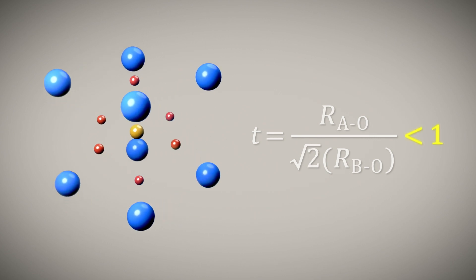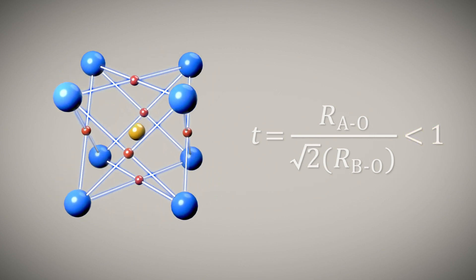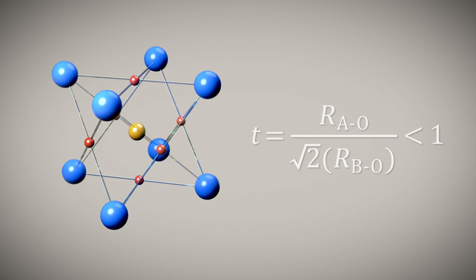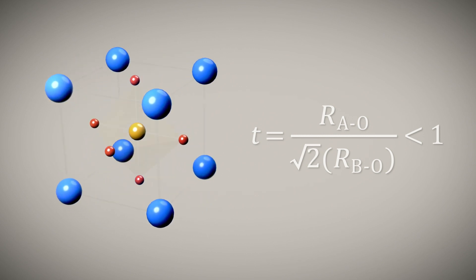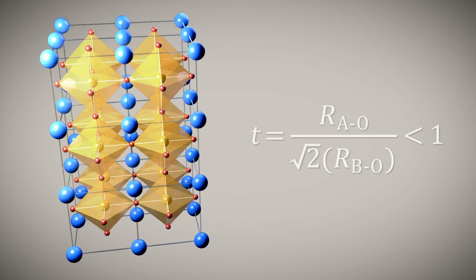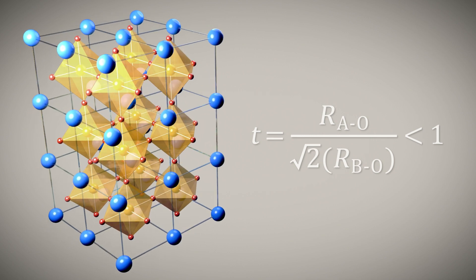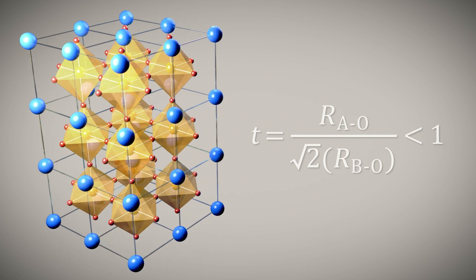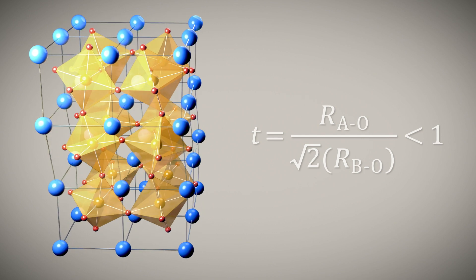When T is less than 1, this indicates that the A site is underbonded. The bonds to the A site are too long. In this case, the material is predicted to undergo octahedral rotation distortions, which shorten the length of the AO bonds.